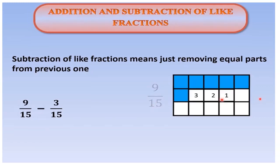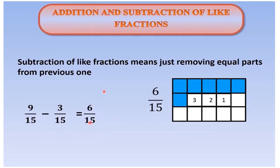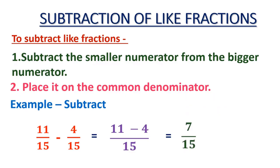For subtraction, we subtract the numerators: these 3 parts are erased, so the answer is 9 minus 3, which equals 6 by 15. In one more example: 11 by 15 minus 4 by 15 — we just subtract the numerators — giving the answer 7 by 15.